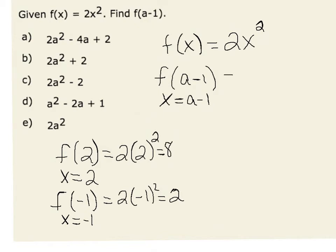This would give us 2 times x squared, and x is just a minus 1. So we would have 2 times the quantity of a minus 1 squared. Since that is not one of our options, this means that we want to simplify a minus 1 squared.